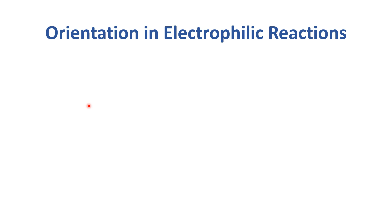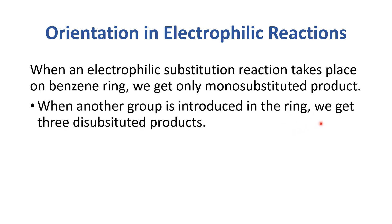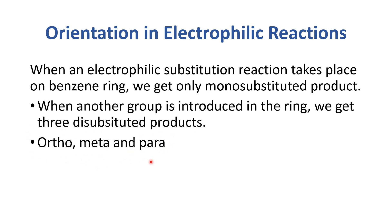In the very first lecture we discussed that benzene gives a monosubstituted product, but when we introduce a second substituent into a monosubstituted benzene, it yields three disubstituted products: ortho, meta, and para.